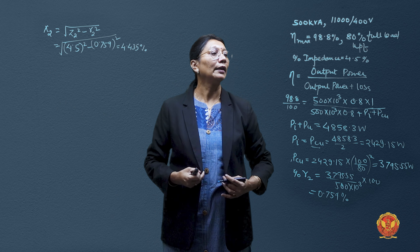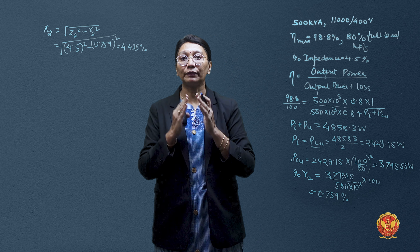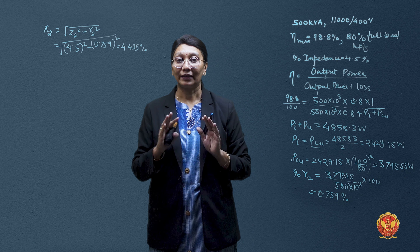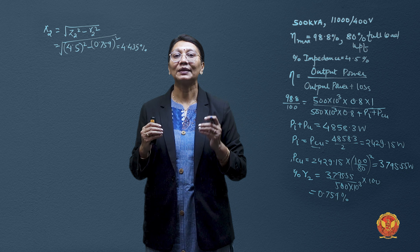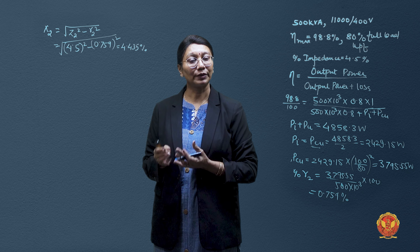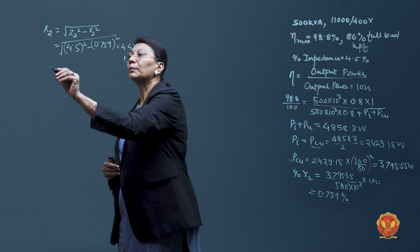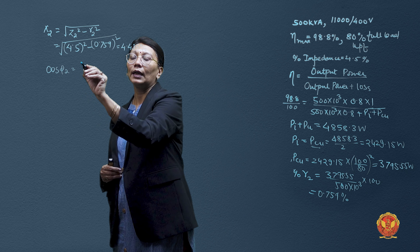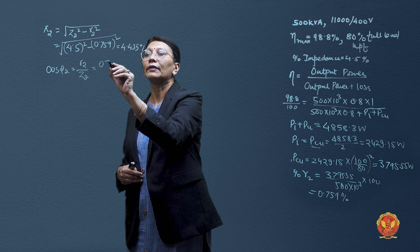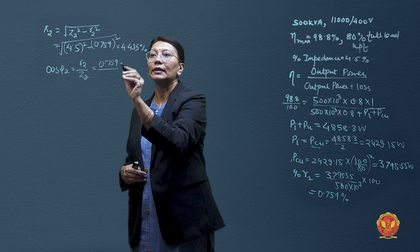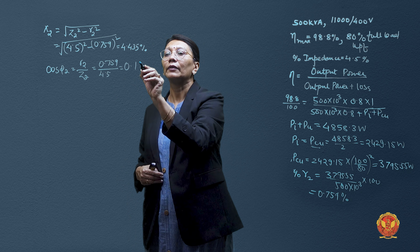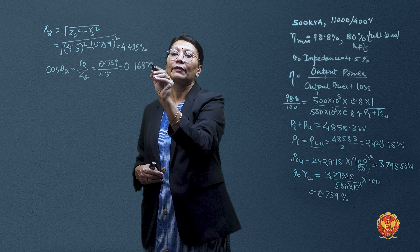Now we find the power factor at which maximum voltage regulation occurs. This is the minimum power factor for the system and represents the worst condition. It is given by cos φ₂ = R/Z = 0.759 / 4.5 = 0.1687 lagging. The closer the power factor is to unity, the better the system performance.